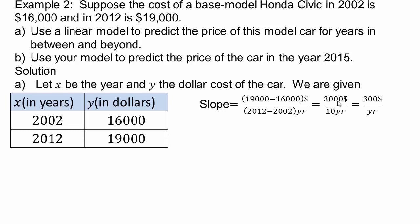So first let's just get slope because any time you want to use linear model, which means line, you have to have slope or the rate of change. So you have 19,000 minus 16,000, that's the rise, 2012 minus 2002, that's the number of years. So we have $3,000 for every 10 years or $300 per year. So the Honda Civic base model is basically increasing by $300 per year.